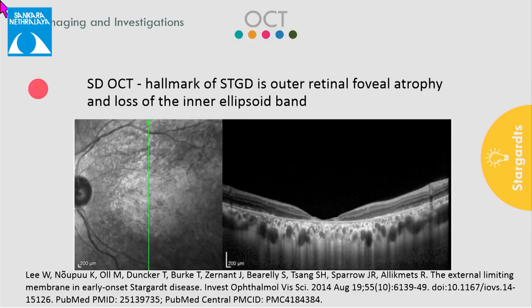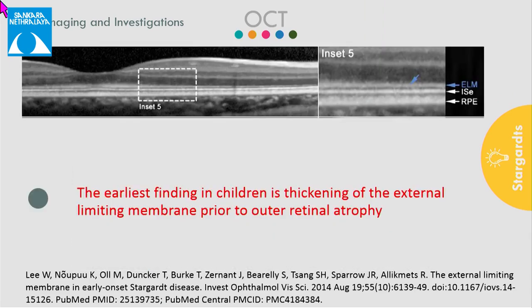On OCT, there is thinning seen in the fovea with loss of the outer retinal layers. In children, before any structural and functional changes occur, the earliest finding noted is a thickening of the external limiting membrane, which reflects a gliotic response to cellular stress at the photoreceptor level.